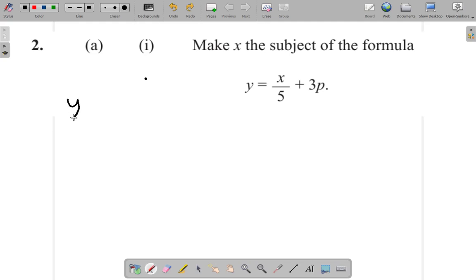You have the formula y equals x divided by 5 plus 3p. Now, one thing you can do is to multiply everything by 5 so that you have no fractions. So if you multiply through by 5,